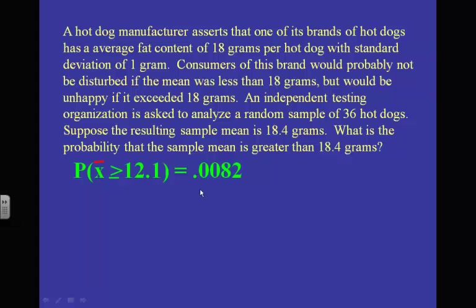Using normCDF: lower is 18.4, upper is 9999999, mean is 18, and standard deviation is 1 divided by the square root of 36. Make sure you do that on your calculator to verify.